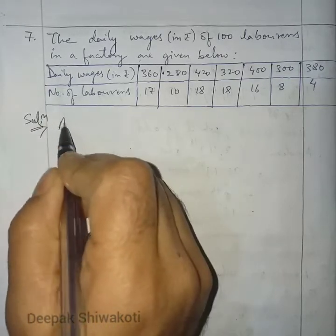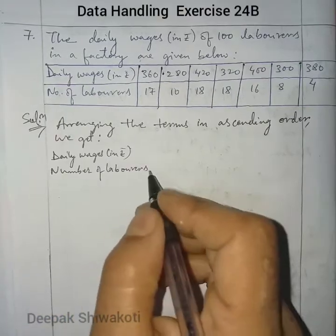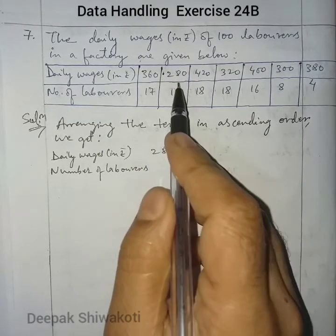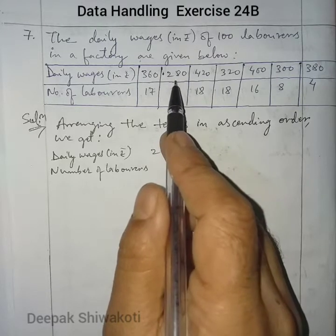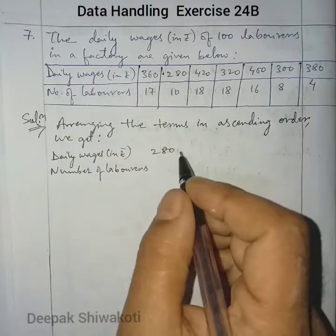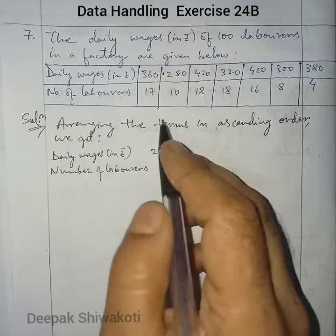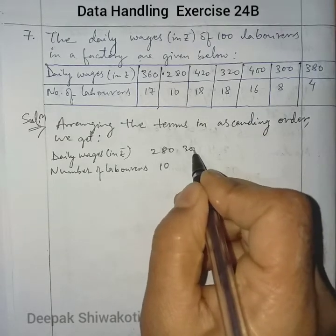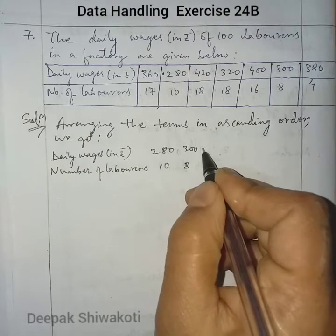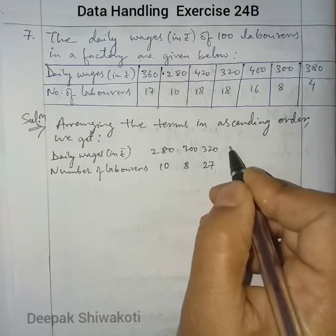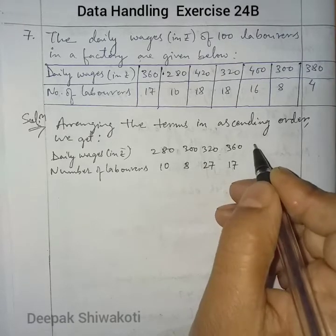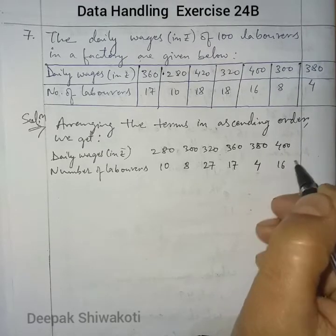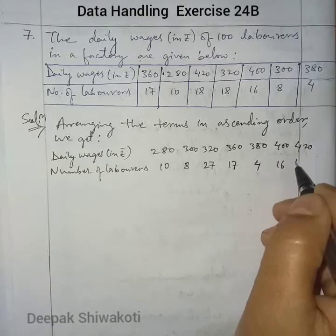Arranging the terms in ascending order: 280 is the smallest daily wage and 420 is the highest. So: 280 — 10 laborers, 300 — 8 laborers, 320 — 27 laborers, 360 — 17 laborers, 384 — 4 laborers, 416 — 16 laborers, and 420 — 18 laborers.